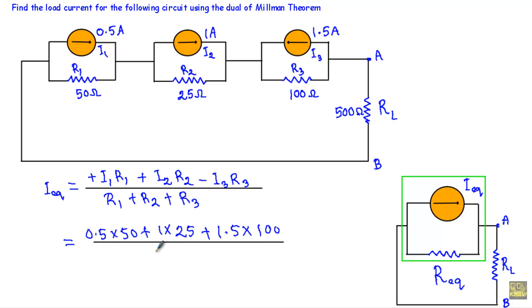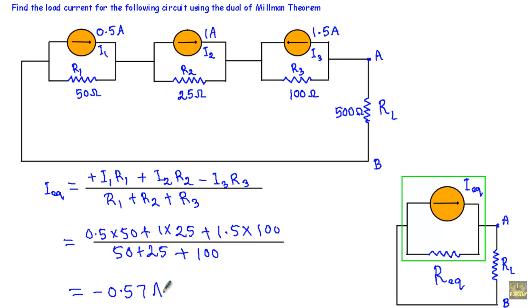...divided by 50 plus 25 plus 100 ohm. This results in −0.57 ampere. The minus sign implies that our I_equivalent will flow in the opposite direction to what we assumed.